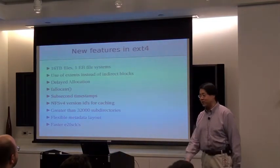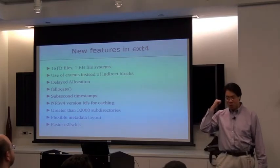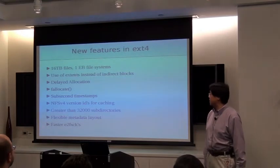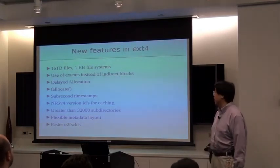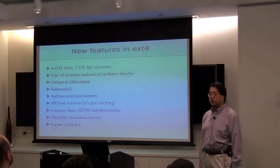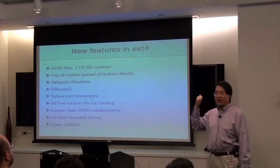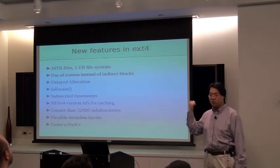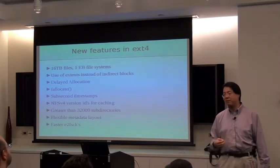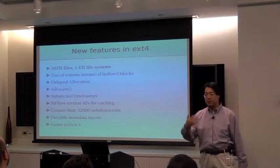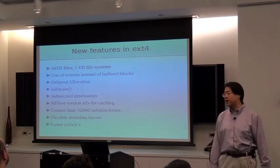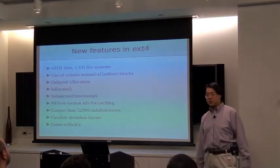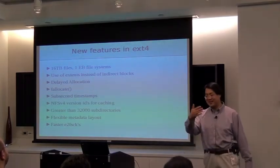What are some of the new features in EXT4? The new limits are now 16 terabyte files and up to one exabyte file systems — though that's a theoretical maximum. There are some practical limitations you'll probably run into before getting there, particularly around RAID awareness. But in terms of the format, you can in theory make a one-exabyte file system.